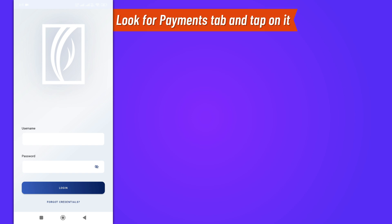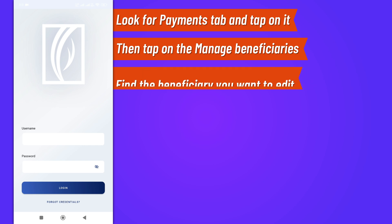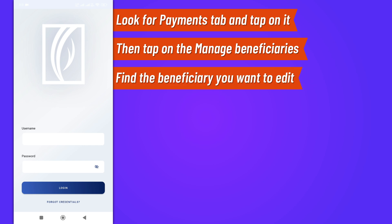Once you're logged in, look for the payments tab at the bottom of your screen. Tap on it, then tap on manage beneficiaries. In the manage beneficiaries section, you'll find a list of all the beneficiaries you've added before. Scroll through the list or use the search function to find the beneficiary you wish to edit.